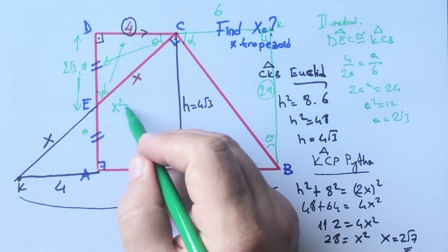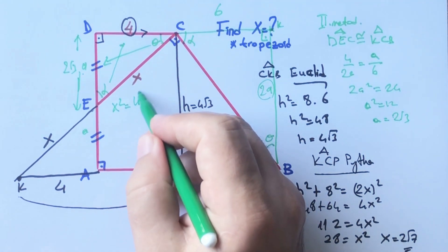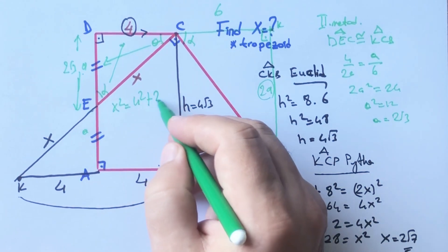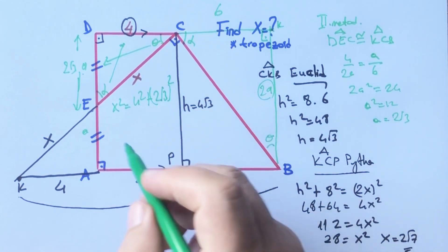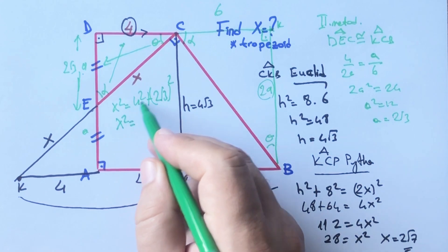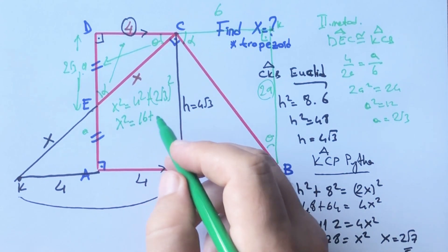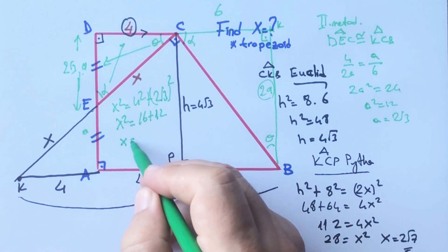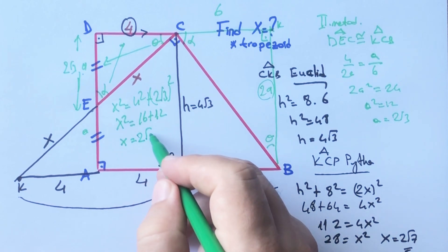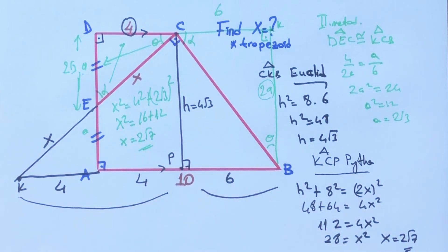In this triangle, if we apply Pythagorean theorem, x² = 16 + 12. Therefore x is going to be 2√7 units. Thanks for watching.